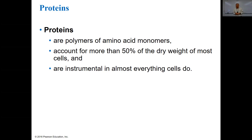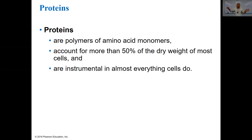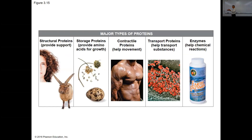Compare that to carbohydrates — how many different monomers does a carbohydrate have? One: glucose. Starch, glycogen, cellulose — all glucose. Proteins have 20 different kinds. That doesn't mean there are only 20 amino acids that exist — there are more — but only 20 are used by all living things to make proteins. Functions include structural proteins, storage proteins, contractile proteins, transport proteins, and enzymes.